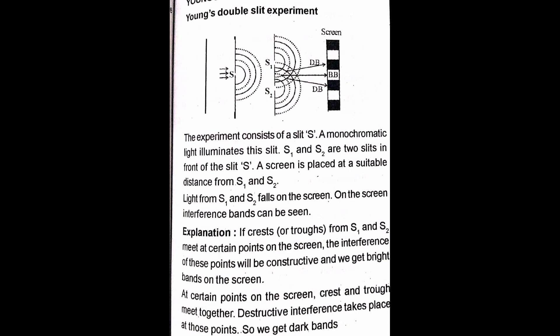Suppose two crests or two troughs coming from S₁ and S₂ meet at a particular point on the screen — there will be constructive interference and the band will be bright. If one crest and one trough meet, there will be destructive interference and dark bands are formed. So alternately we get bright and dark bands.